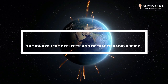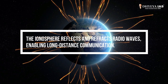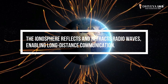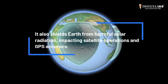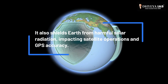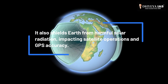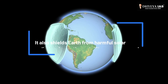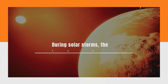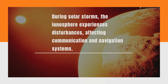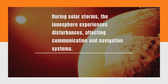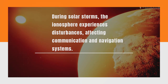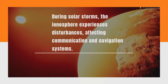The ionosphere reflects and refracts radio waves, enabling long-distance communication. It also shields Earth from harmful solar radiation, impacting satellite operations and GPS accuracy. During solar storms, the ionosphere experiences disturbances affecting communication and navigation systems.